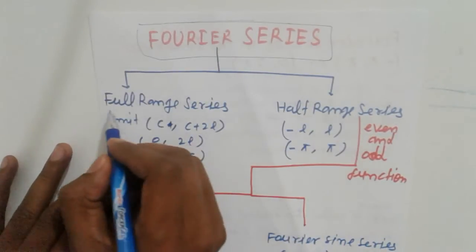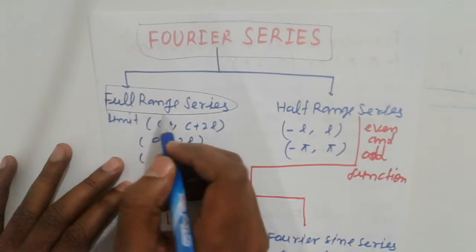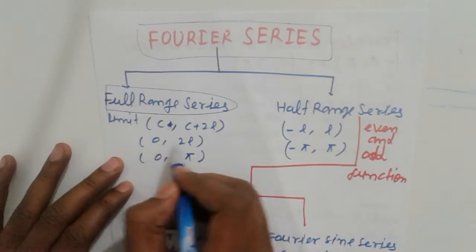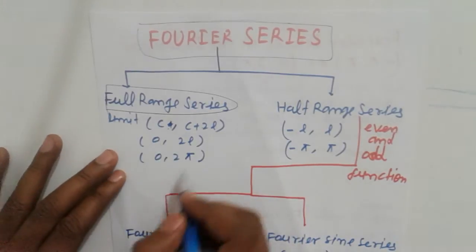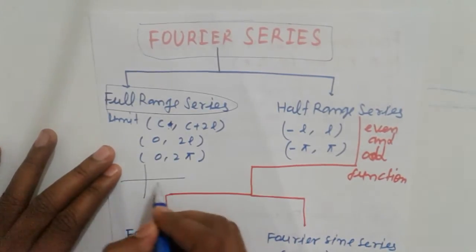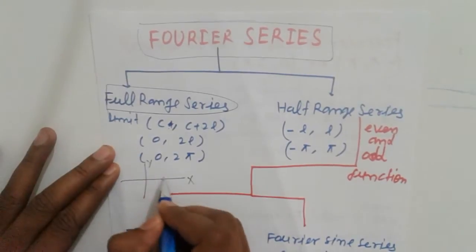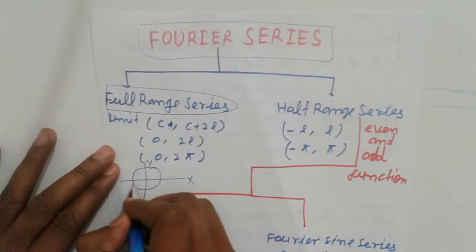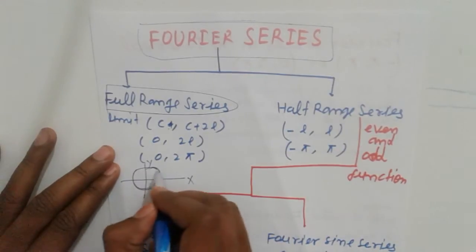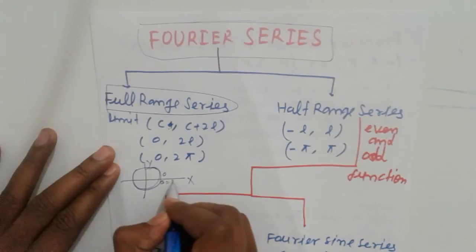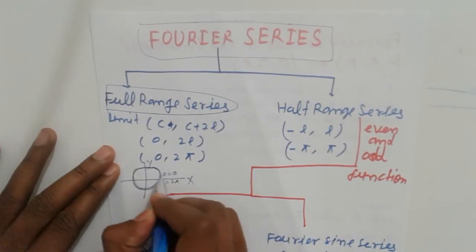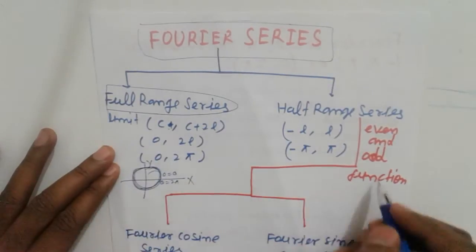Full-range series is when the limits are C to C+2L, 0 to 2L, and 0 to pi. In this case, suppose we take the x-axis and y-axis — that is one complete round taken as the limit. That is a full-range series problem. Complete one round: here theta equals 0, here theta equals 2pi, and back to theta equals 0. So a complete round is a full-range series.